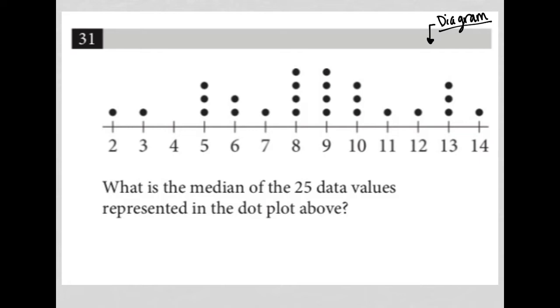So we have this number line here between 2 and 14, and we have these data points just letting us know that there's one 2 value, whatever these points represent. There are 3 5s, there are 4 8s and 4 9s, so on and so forth. There are 3 13s. So what is the median of the 25 data values represented in the dot plot above?